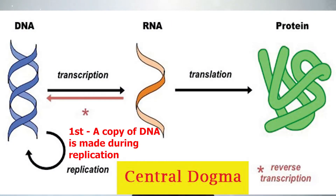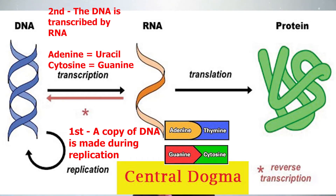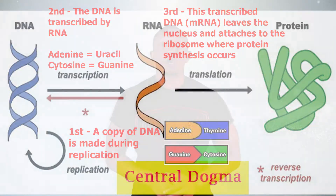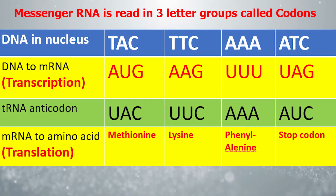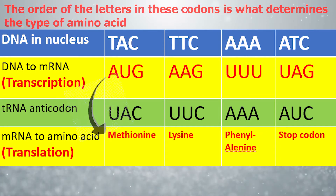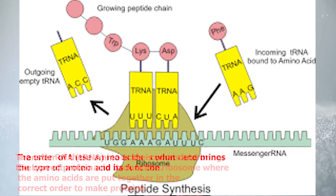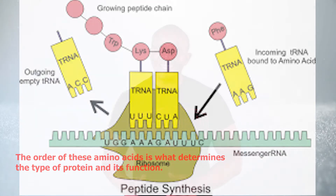But back to protein synthesis. First, a copy of DNA is made during DNA replication — adenine pairs with thymine and cytosine pairs with guanine. Second, the DNA is transcribed by RNA where adenine pairs with uracil and cytosine still pairs with guanine. Remember, RNA does not contain thymine, so that's why adenine pairs with uracil. This transcribed DNA has now been converted to messenger RNA that leaves the nucleus and attaches to the ribosome where protein synthesis occurs. The messenger RNA is written in three-letter groups called codons. The order of the letters in these codons determines the type of amino acid. Transfer RNA, also known as tRNA, reads the codons and brings the correct amino acid back to the ribosome where the amino acids are put together in the correct order to make proteins. The order of these amino acids is what determines the type of protein and its function. This is what happens during normal protein synthesis when there is no mutation in the DNA.